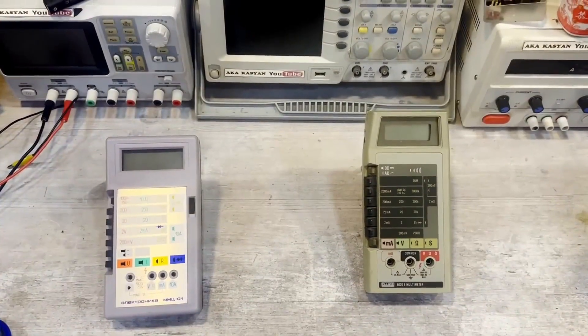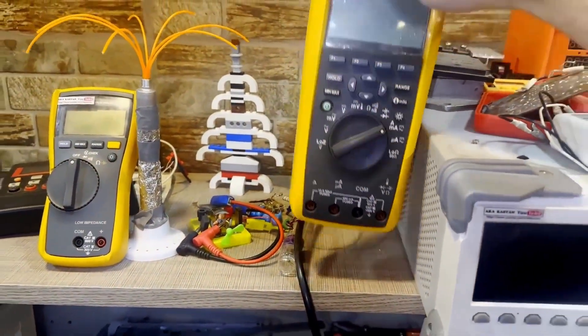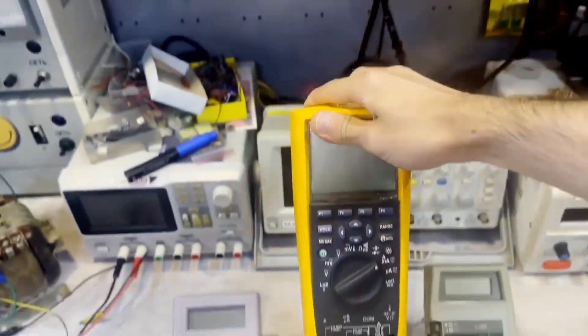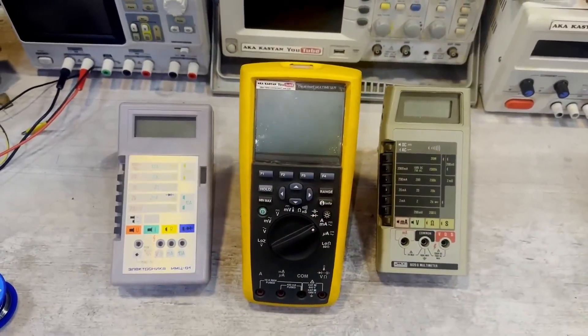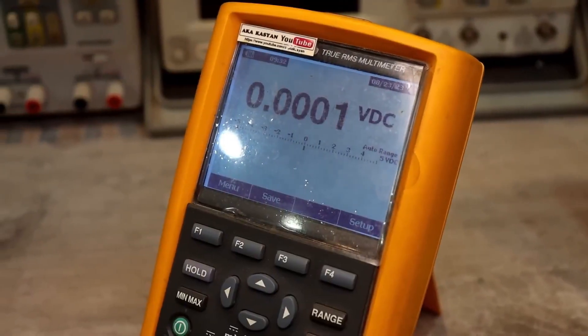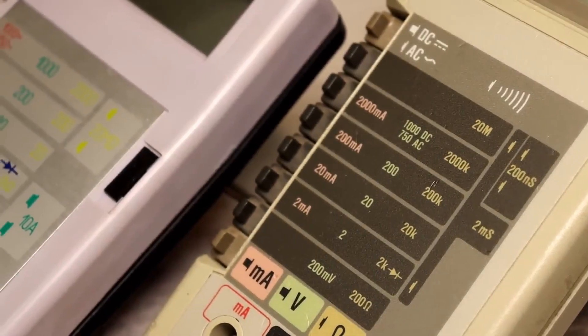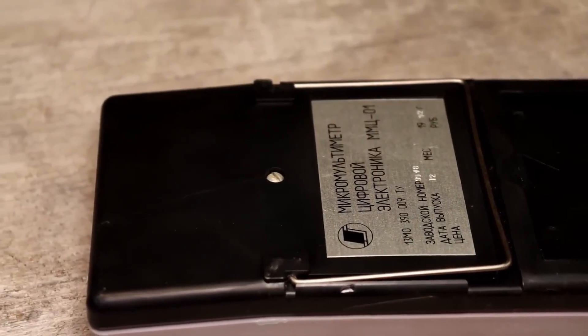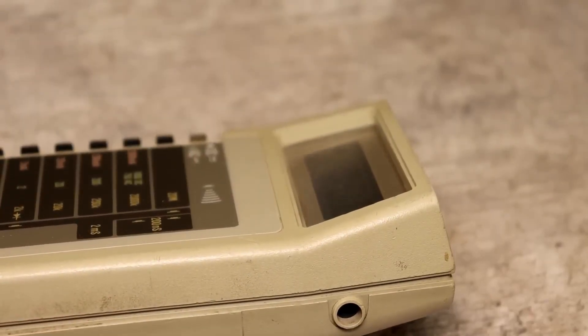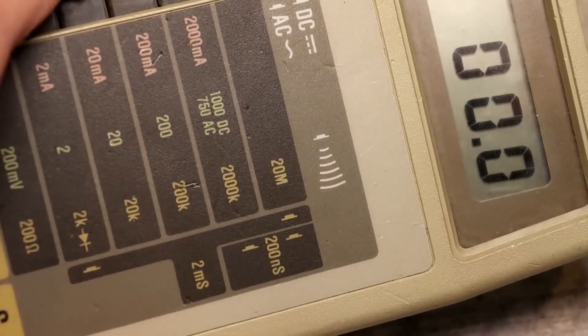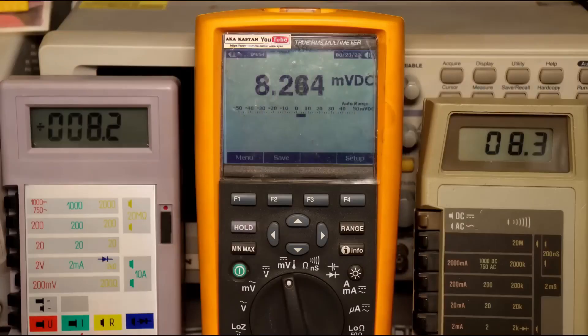For most measurements, our benchmark will be a professional multimeter, the Fluke 289 industrial grade data logger, which costs about as much as a week's vacation in the Maldives, or slightly less. It has a much higher accuracy in all measurements compared to the devices being tested. It should also be noted that the test multimeters have factory calibration and have not undergone verification. Electronica is 100%, but I'm not sure about the Fluke since I'm not its first owner, and it didn't have the appropriate stickers or documents. Let's start with direct voltage.